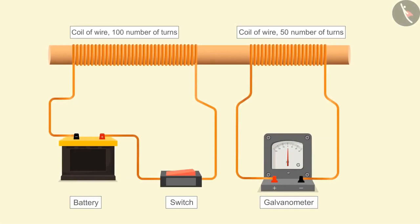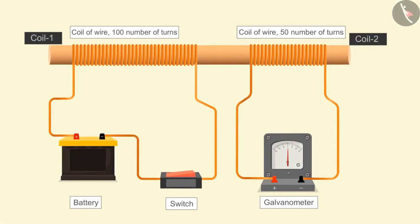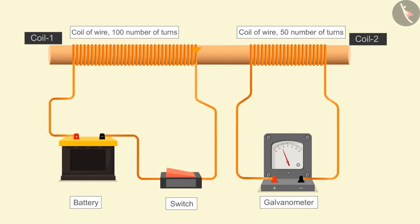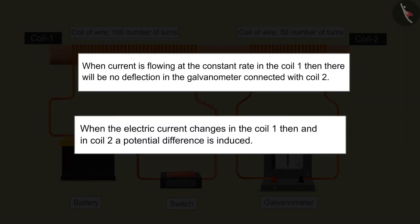Taking this activity one step ahead — replace the magnet with another current-carrying coil having 100 turns. Hold the two coils with the help of a hollow cardboard cylinder. When we put on the switch connecting coil one with the battery, a momentary deflection can be seen in the galvanometer needle in one direction, and the needle jumps back to zero quickly. If we put off the switch, a deflection in the opposite direction can be seen. When the current is flowing at a constant rate in coil one, there is no effect on the galvanometer connected with coil two.